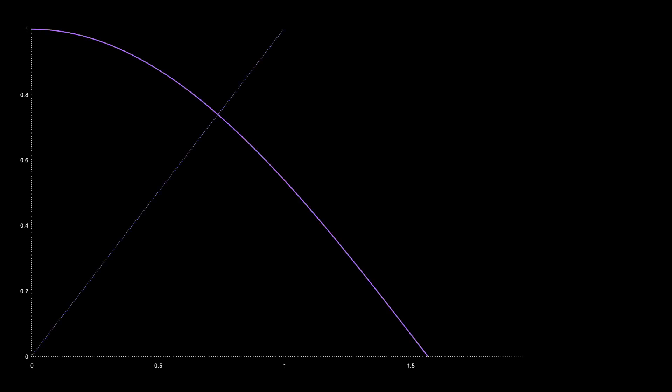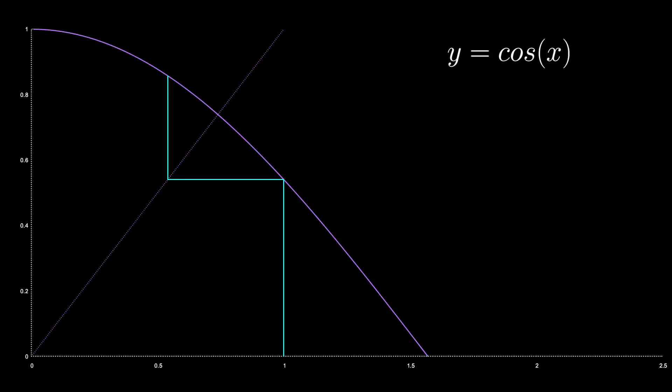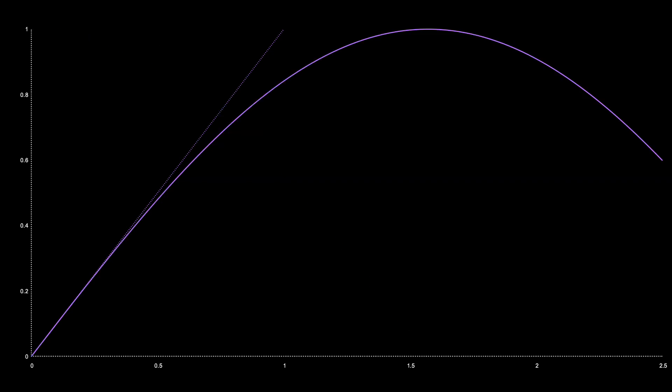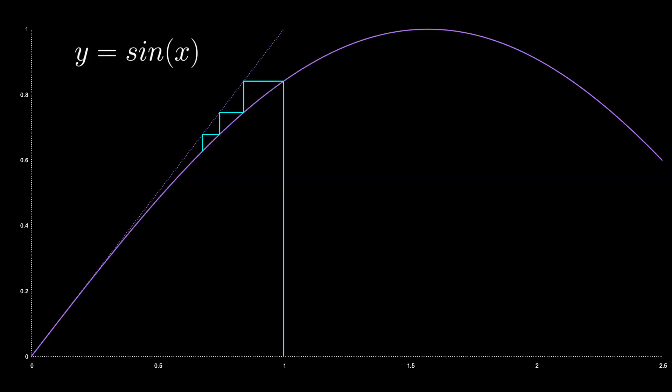We can also view these iterations graphically. Here is what it looks like for cosine with 25 iterations. And now for sine.